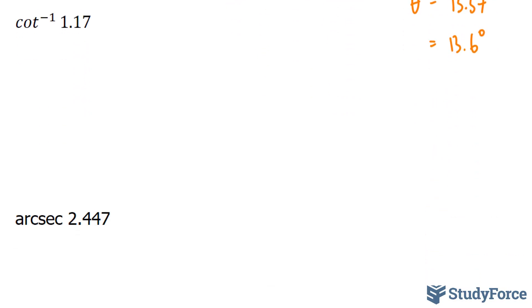In our next example, we're expected to find the inverse cotangent of 1.17. Now, just like in the previous example, we have to set this equal to theta. And if we do that, we can say cotangent theta is equal to 1 over cotangent.